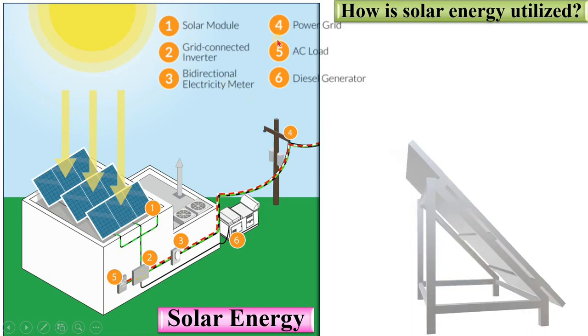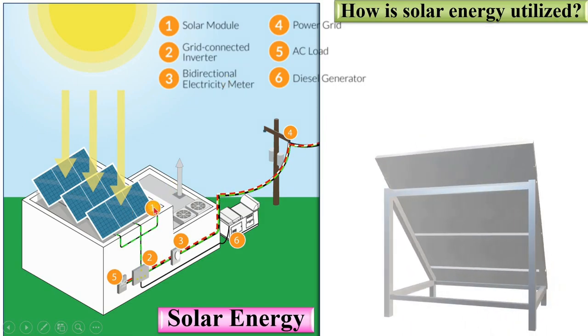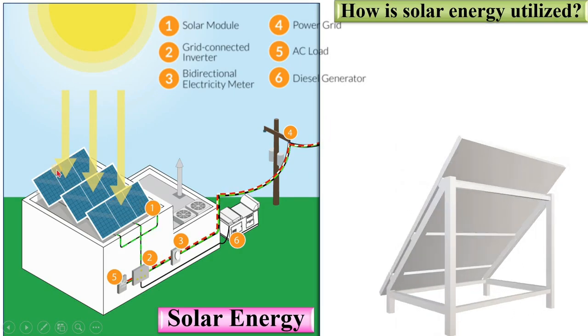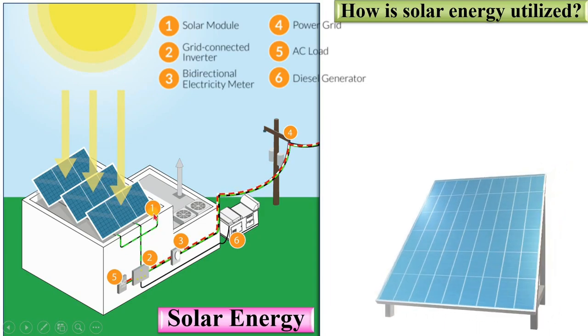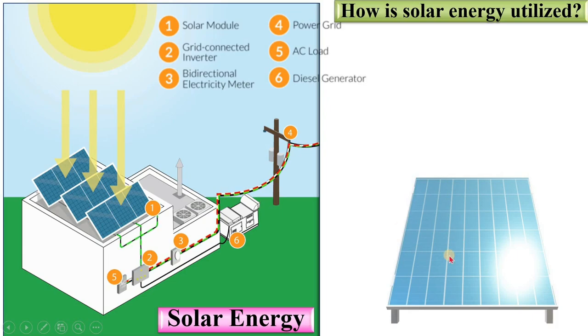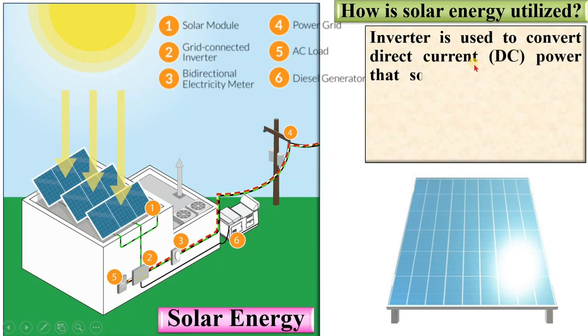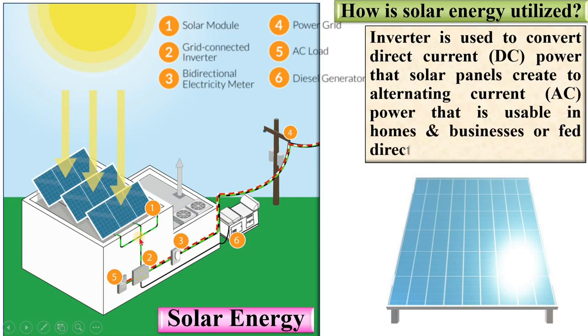Here is an example of solar energy utilization. You can see the first one, solar modules. These are the different solar panels that receive the solar energy. This is the inverter, which is used to convert direct current, DC power that solar panels create, to alternating current that is usable in homes and businesses or fed directly into the grid. Very simple, the inverter converts DC to AC.